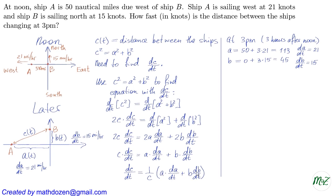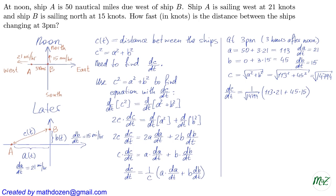Using C² = A² + B², we get C = √(113² + 45²) = √14794. Now we plug everything into our formula: dC/dt = (1/√14794) × (113 × 21 + 45 × 15). Crunching the numbers gives 3048 / √14794, which is approximately 25.059 nautical miles an hour. That's how fast the distance between the ships is changing at 3 p.m.